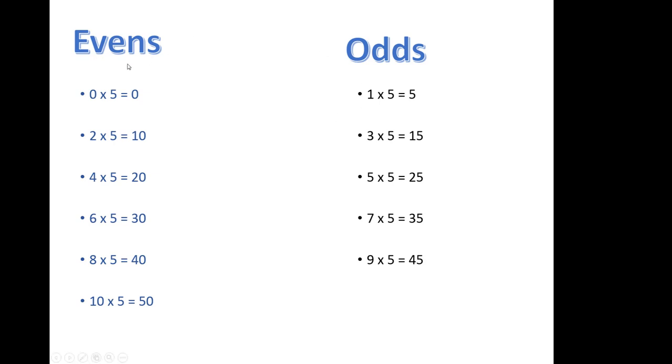Multiplying five by an even number, that's on the left. Notice anything about them? Any ideas why? What about the odds?